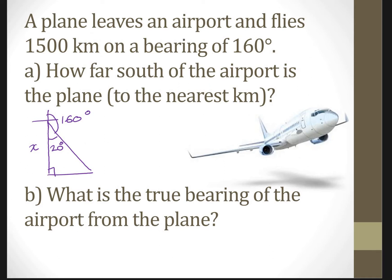Second question, Part B: What is the true bearing of the airport from the plane? This is the airport because the airplane left from the airport, and this is the plane now. To find the bearing, always draw a reference point first. This is north. From the plane, they're asking this angle here — from north, all the way clockwise until you hit the line. That's the bearing.